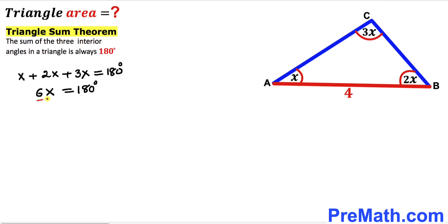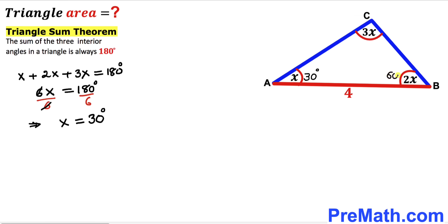Now I am going to divide both sides by 6 to isolate x. The 6s cancel, so our angle x turns out to be equal to 30 degrees. Therefore, angle BAC is 30 degrees, angle ABC (2x) is 2 times 30, which gives us 60 degrees, and angle ACB (3x) is 3 times 30, which gives us 90 degrees.